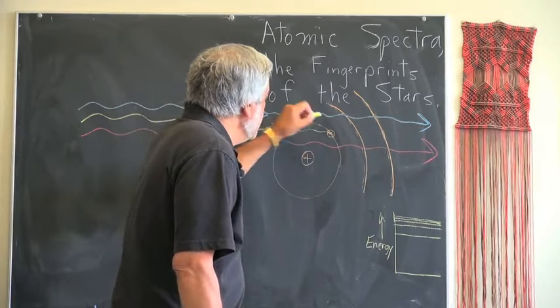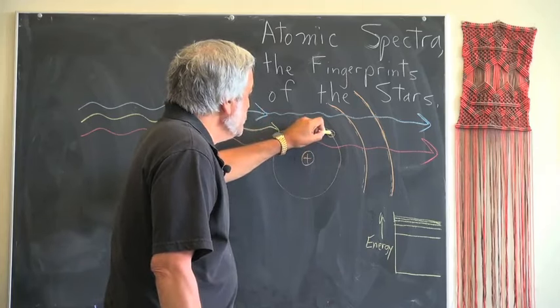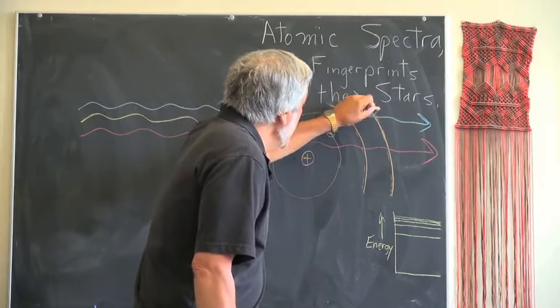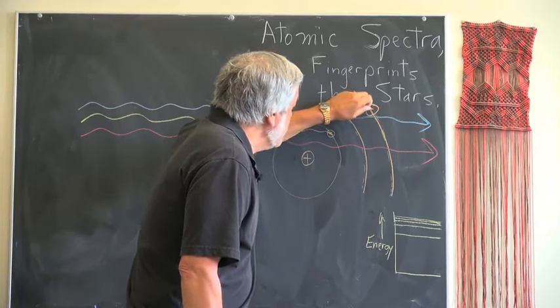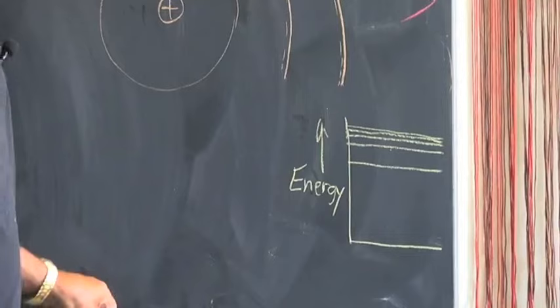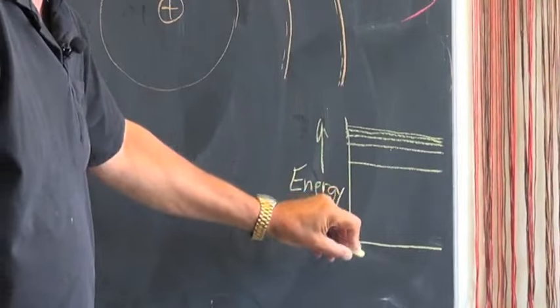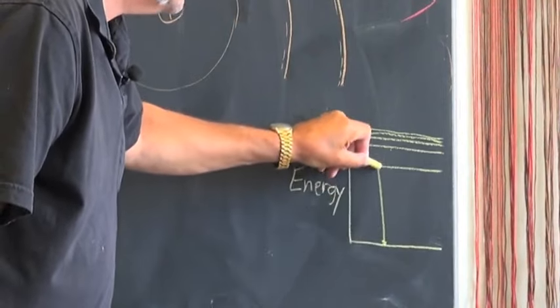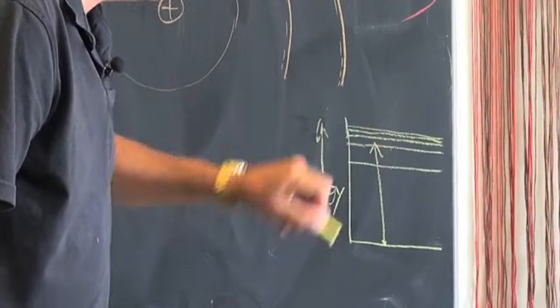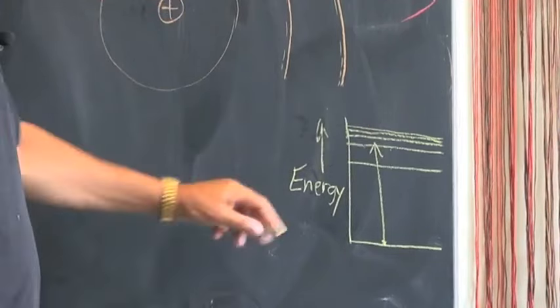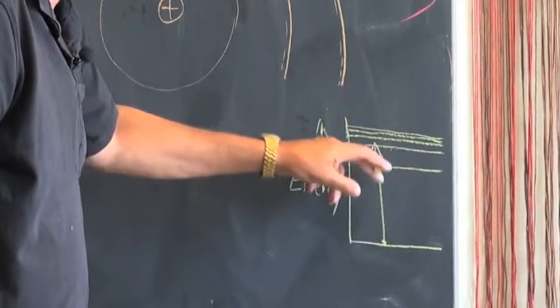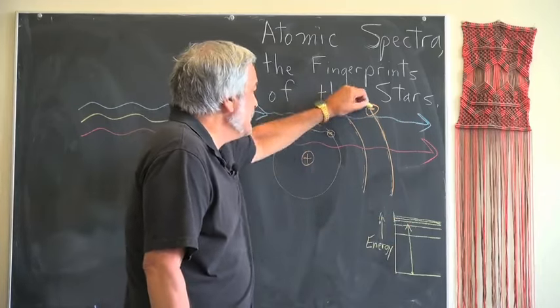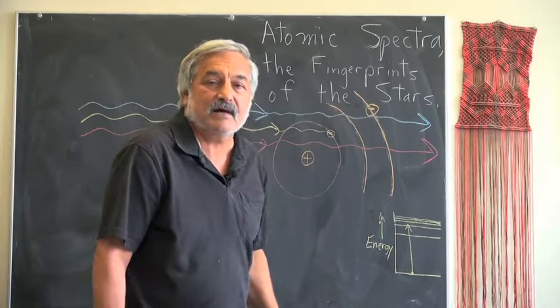So the situation might be that the blue photon continues on its merry way. The red photon continues on its merry way. But the yellow photon can be absorbed by the electron, which then jumps up to a higher energy orbit. This would correspond on our energy diagram to an electron in the ground state going into the second excited state. And that energy difference has to correspond exactly to the photon that has been absorbed by the electron.